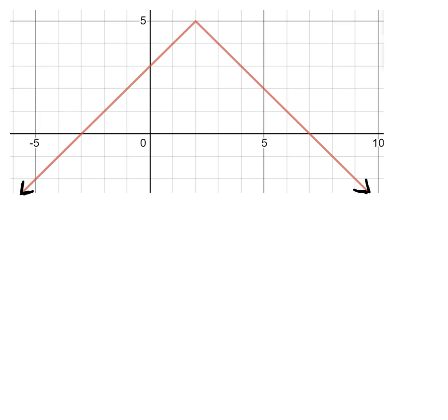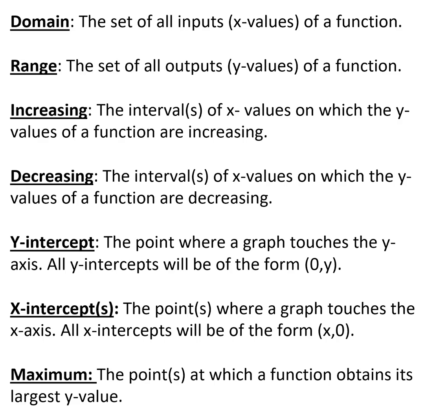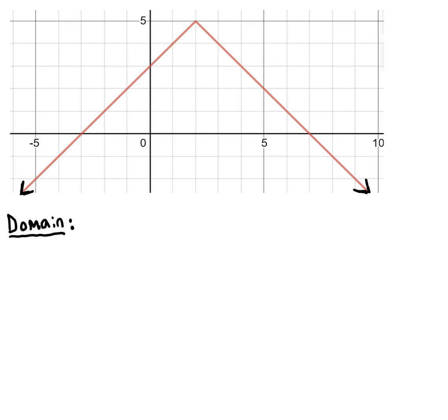Here I have a graph. This is an absolute value function, interestingly enough, which you'll learn much more about in Math 3. The domain of this function, since it says it's the set of all x values, I'm going to write an inequality based on x. So x is greater than the furthest left that this graph ever goes, and because we have an arrow over here, that means the graph keeps going left forever.